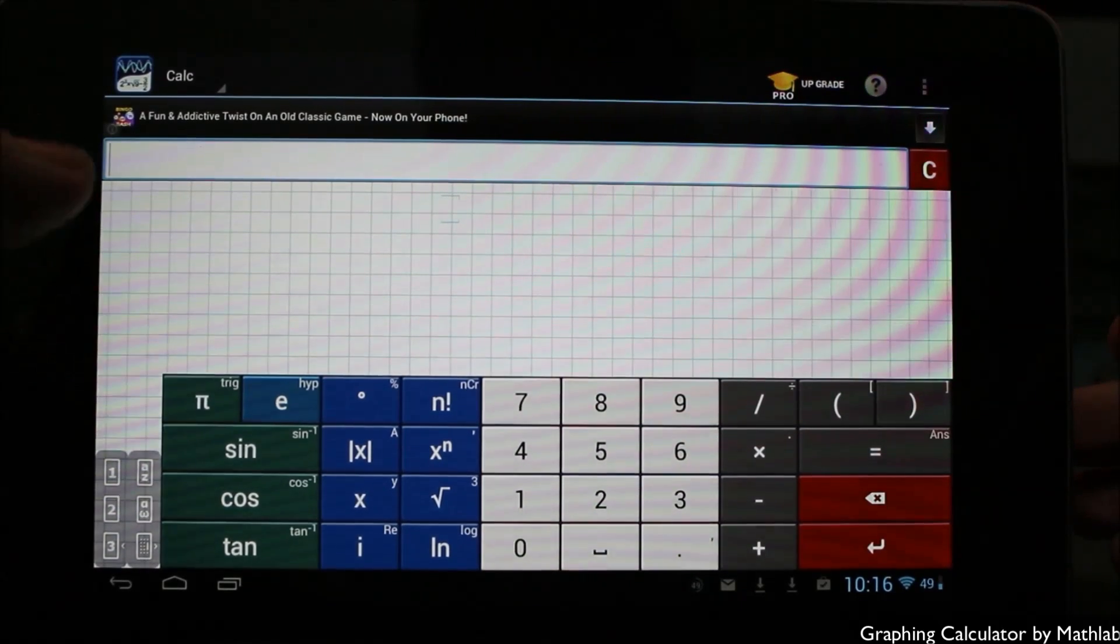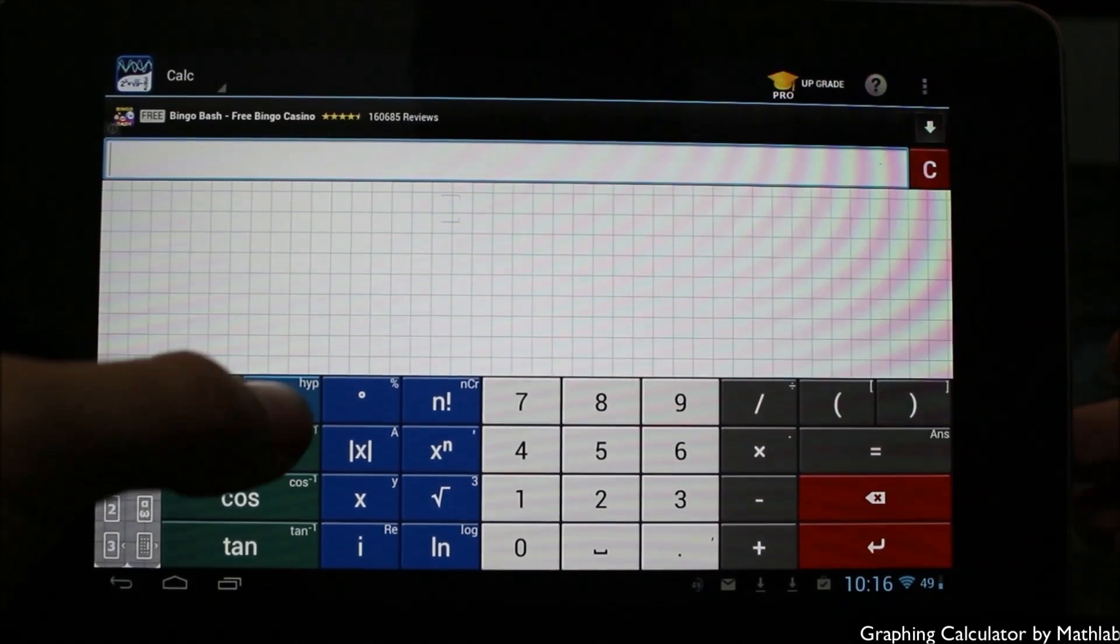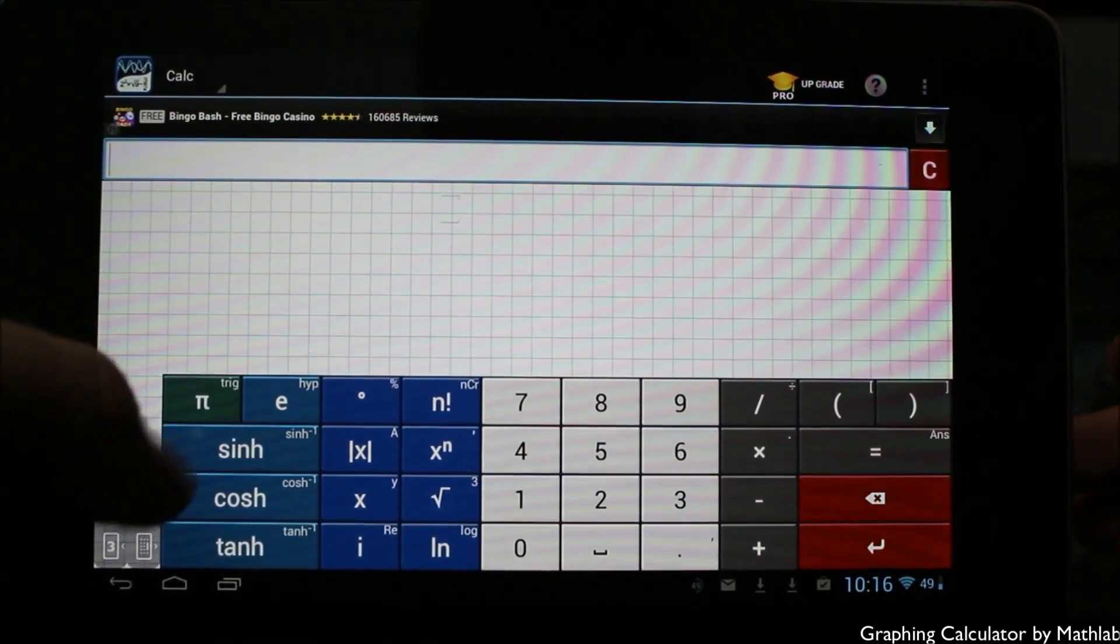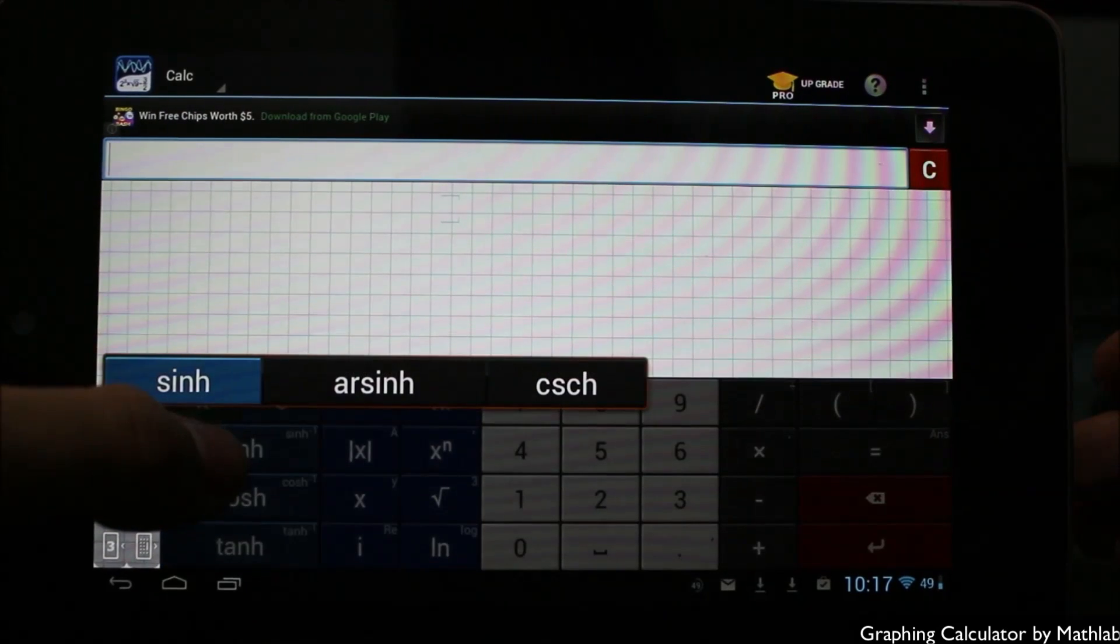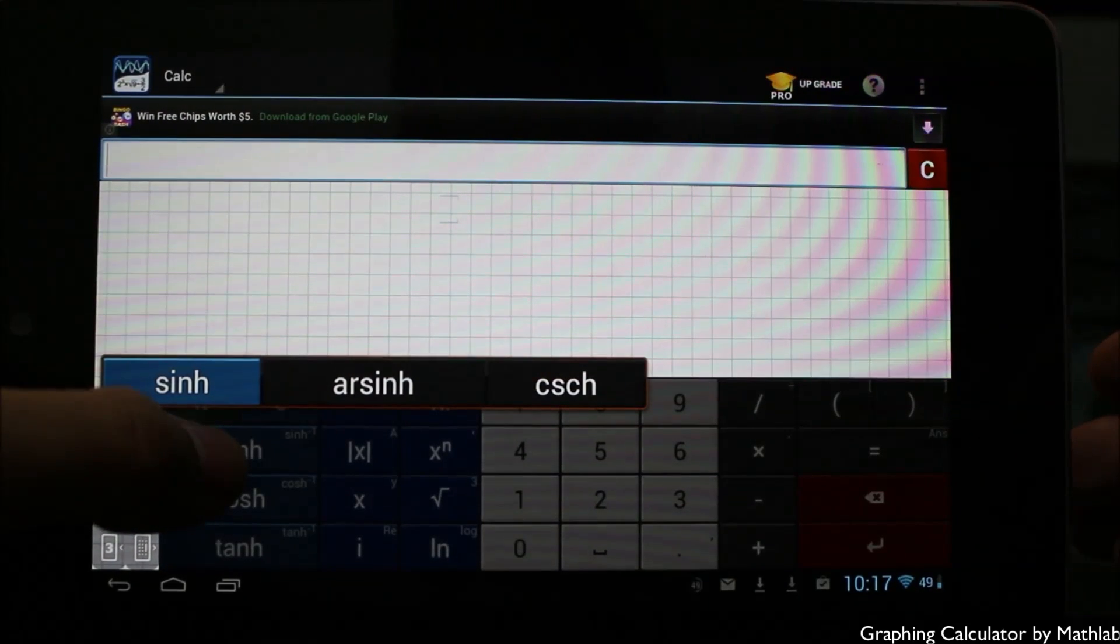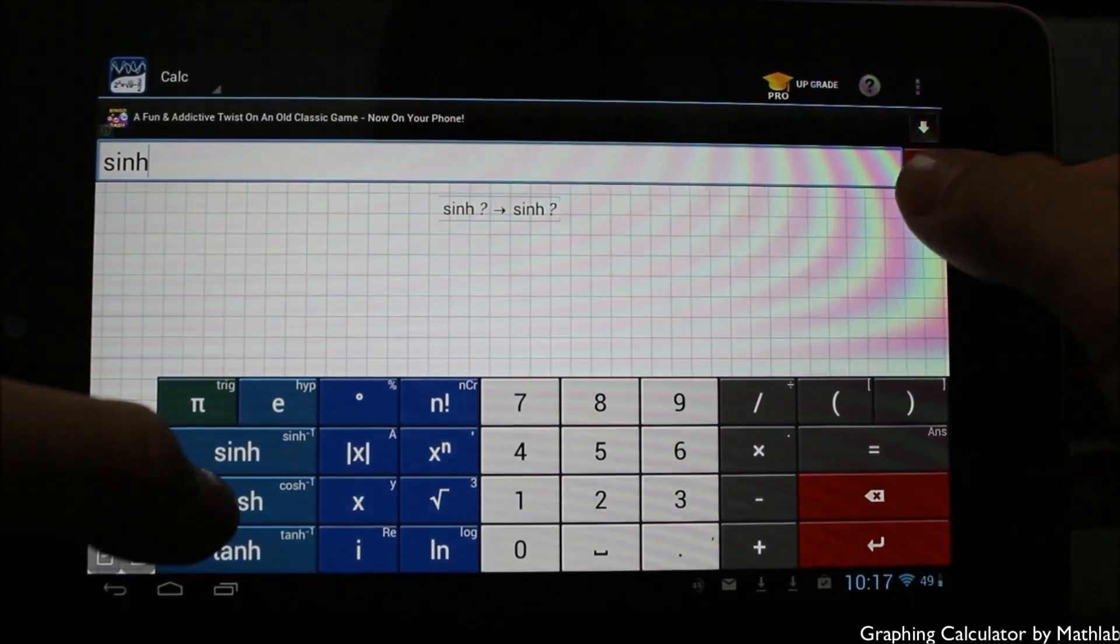If you want to get hyperbolic functions, you tap on the e here and now you'll see sine, cosine, tangent change to blue. If I hold on something like sine, for example, you can see I get more options: arc sine, and also cosecant. I can simply drag left or right to get to those options.